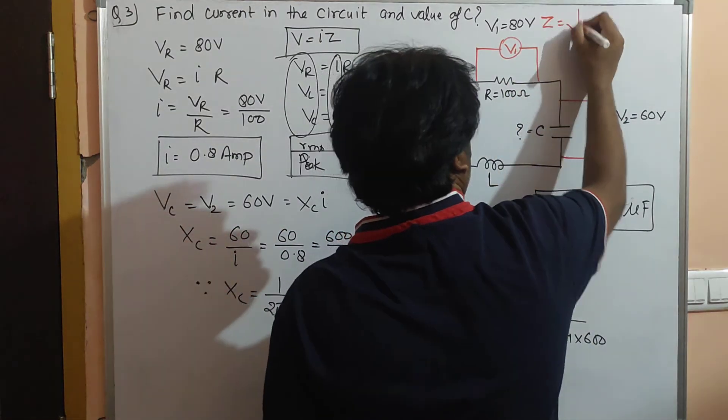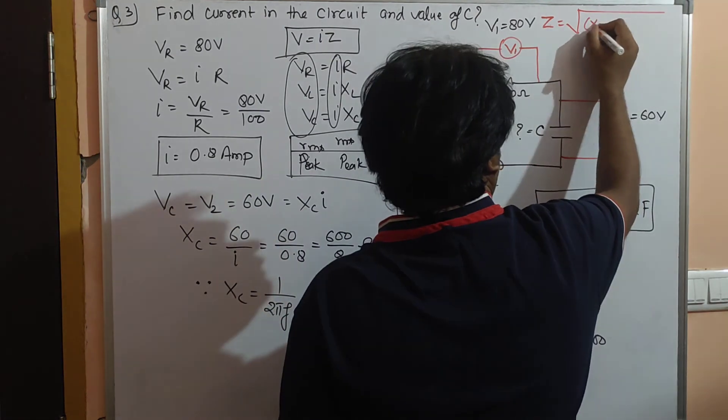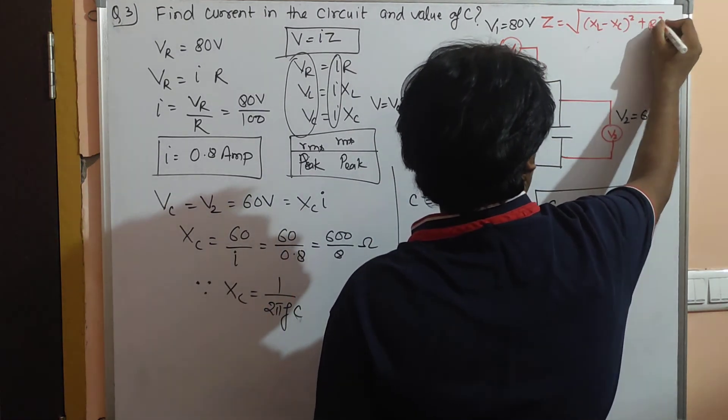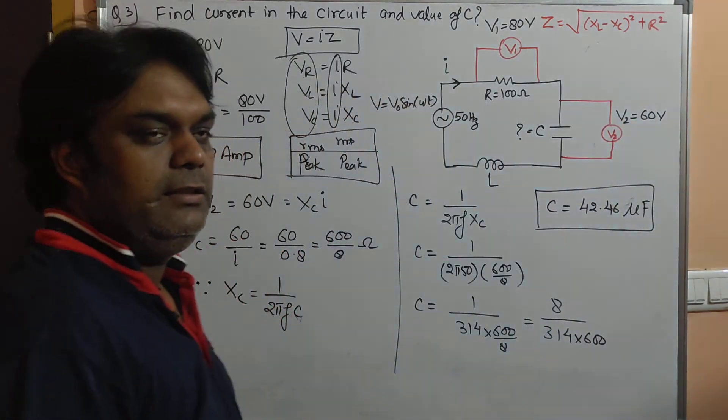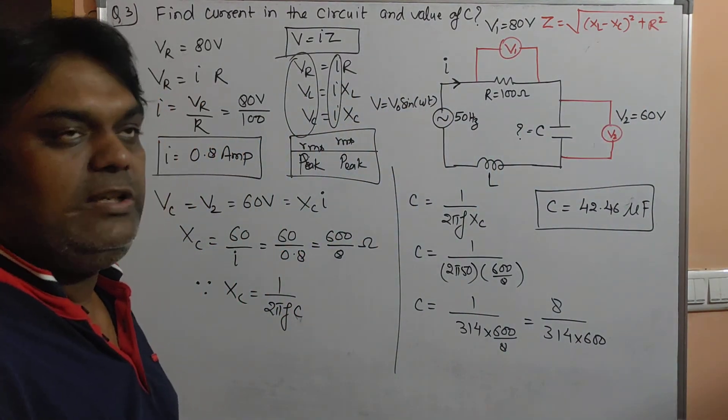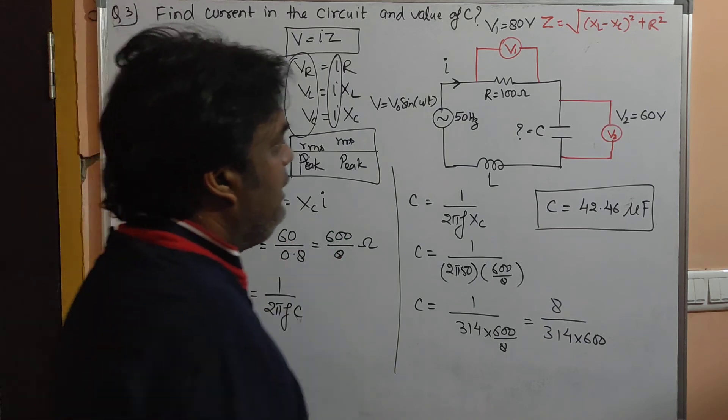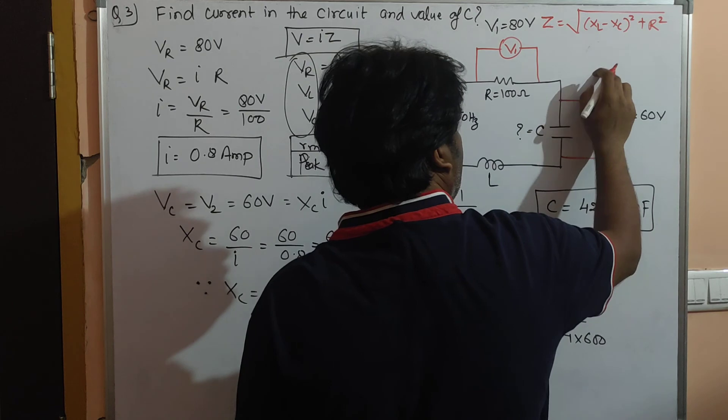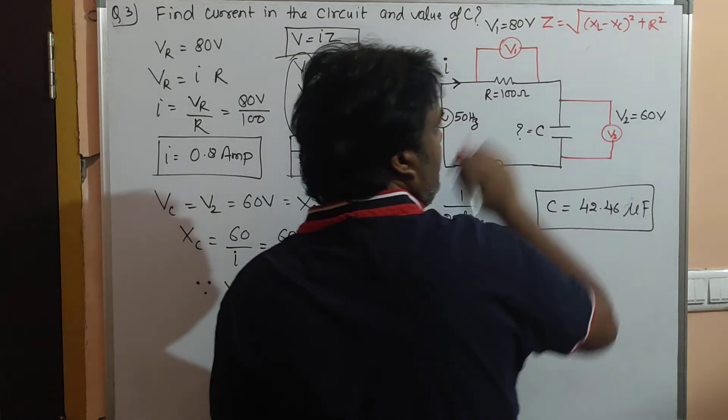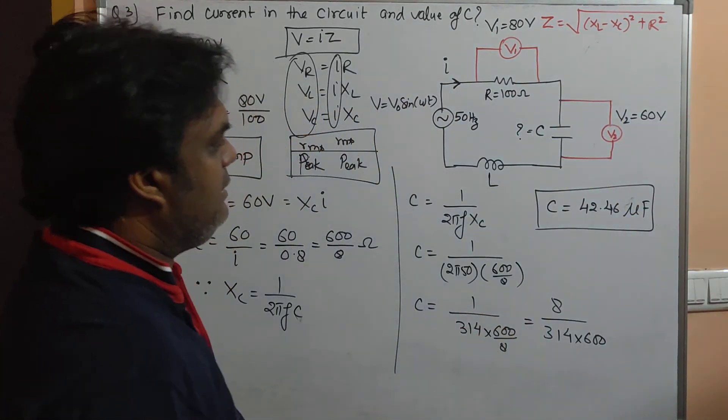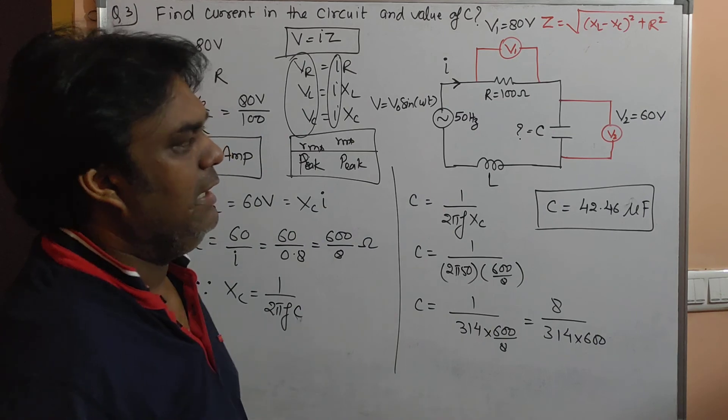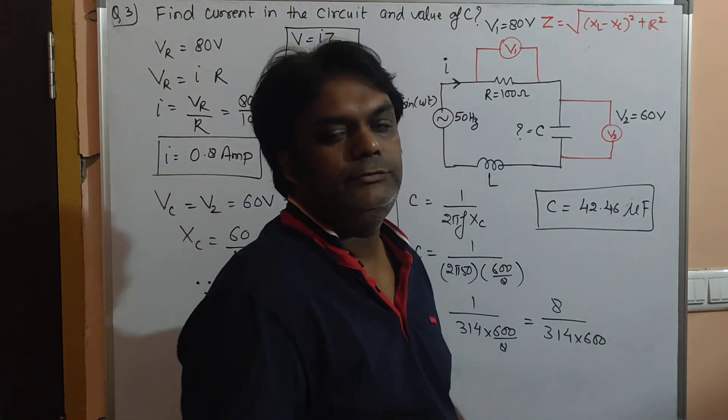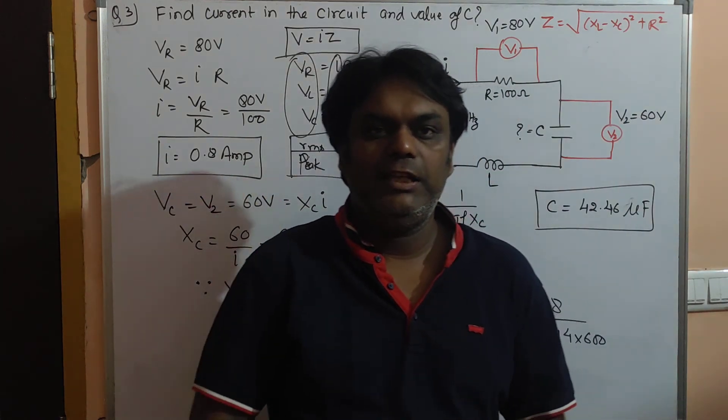Z equals square root of (Xₗ minus Xc) squared plus R squared. This formula is always applicable. If it is an LR circuit, then Xc becomes zero. If it is a CR circuit, then Xₗ becomes zero. If it is simply an R circuit, then both Xₗ and Xc become zero. I hope this is clear. Thank you.